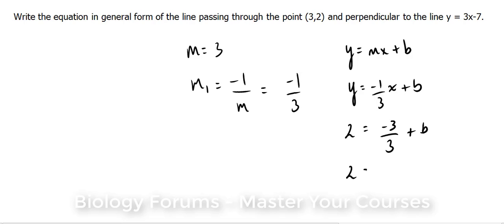And we end up with 2 equals negative 1 plus b, and therefore 2 plus 1 equals 3, and that is equal to your b value.